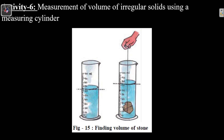This completes the chapter. In this chapter we learned: what is measurement and why we need it, what are physical quantities and their types, what are units and how they are differentiated, the modern measurement system, and measurement of length, mass, weight, time, and volume.